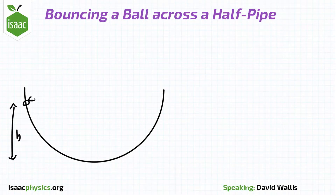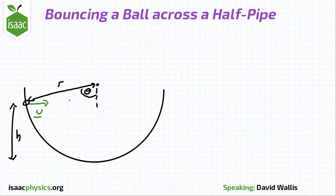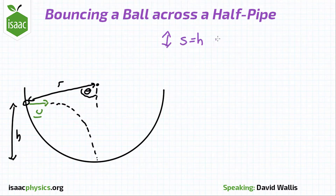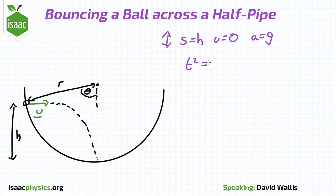The ball is thrown from a height h at a velocity u horizontally. The radius of the half pipe is r. We need to use SUVAT to find u. Vertically, we have s equals h, u equals 0, and a equals g, so t squared equals 2h over g.